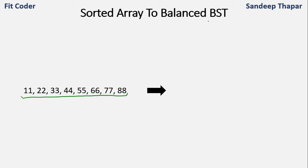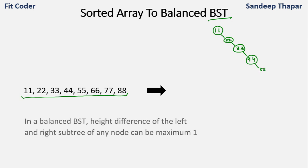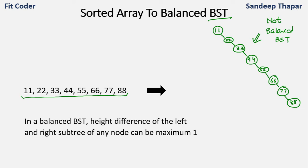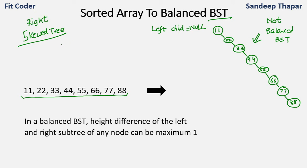If we simply try to create a binary search tree from these elements, then 11 will be the root, 22 will come on the right because it is greater than 11, 33 will come on the right of 22, 44 on the right of 33, 55 on the right of 44, and 88 on the right of 77. This is known as a skewed tree — here nodes are aligned on the right, so this is the right skewed tree. If the nodes are aligned to the left then it will be the left skewed tree.